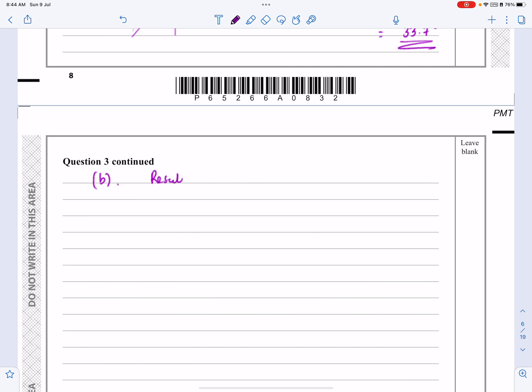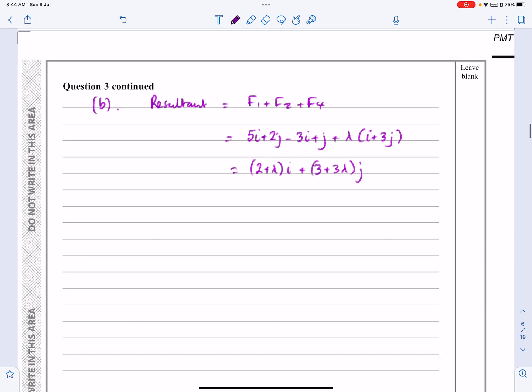So as I said, the resultant, the new resultant is going to be F1 plus F2 plus F4, which is going to be, just be careful, make sure you're using the right ones each time. So 5I and 2J minus 3I and J and then this business, lambda I plus 3J. Now, just like we did last time, we're going to need this in terms of just I's and J's. So 2 plus lambda I and 3 plus 3 lambda J. So that's my resultant force. But now because I know F equals MA, I can say that F is equal to 4 multiplied by 3.25. So I know that F is going to be equal to 13.